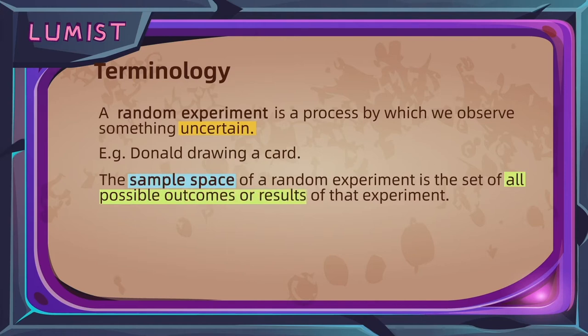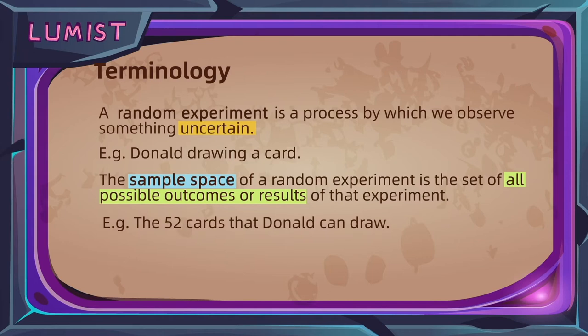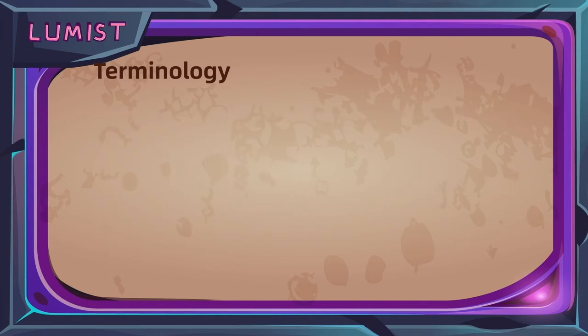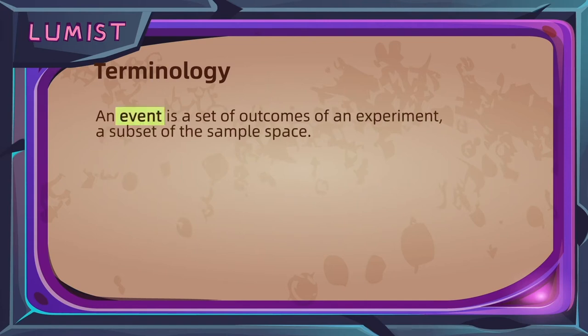So this is the set of all the possible things that can happen in your random experiment. In our example, this will be the 52 individual cards that Donald can draw. Lastly, we define an event as a set of specific outcomes of an experiment. So for all the possible outcomes in the sample space, we define some rule or criteria and single out a subset of the outcomes.